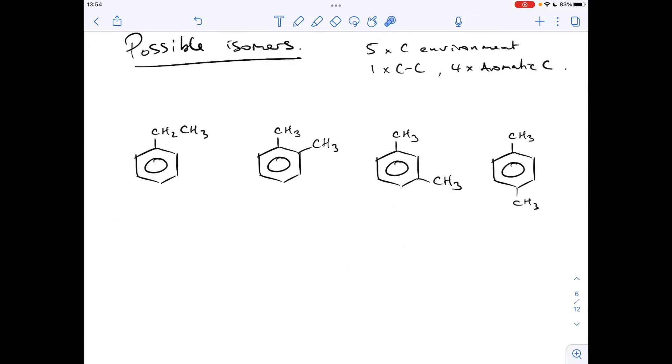OK, so the four possible structures are these four here. So we've got ethyl benzene. And then we could say 1,2-dimethyl benzene, 1,3-dimethyl benzene, 1,4-dimethyl benzene. There's a little reminder of what we found out from the carbon-13 NMR. So we've got five carbon environments and one of them is a carbon-carbon environment. Four of them are aromatic carbons. So we'll just work through left to right and talk about each one and establish whether it could be that or not.